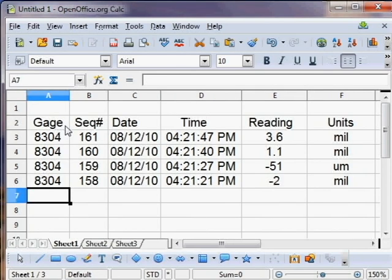Different columns will indicate from left to right the gauge serial number, the measurement sequence number, the date, the time, the replica film thickness measurement, and the measurement units in mils or micrometers.